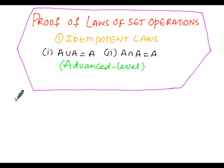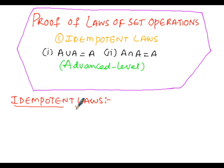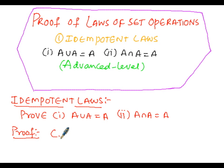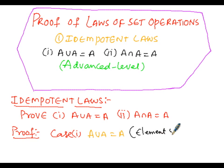Under the idempotent law, number one: prove that A union A equals A, and number two: A intersection A equals A. The proof starts now. In our proof, the first case is A union A equals A. Here we are going to prove it by means of element-wise proof.